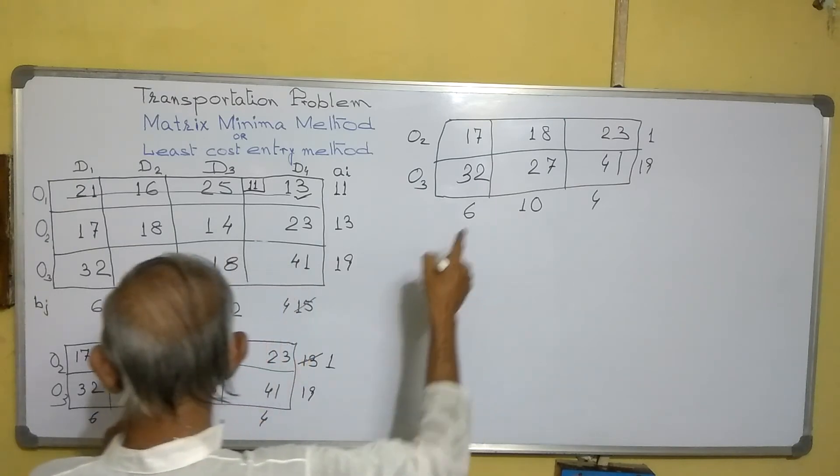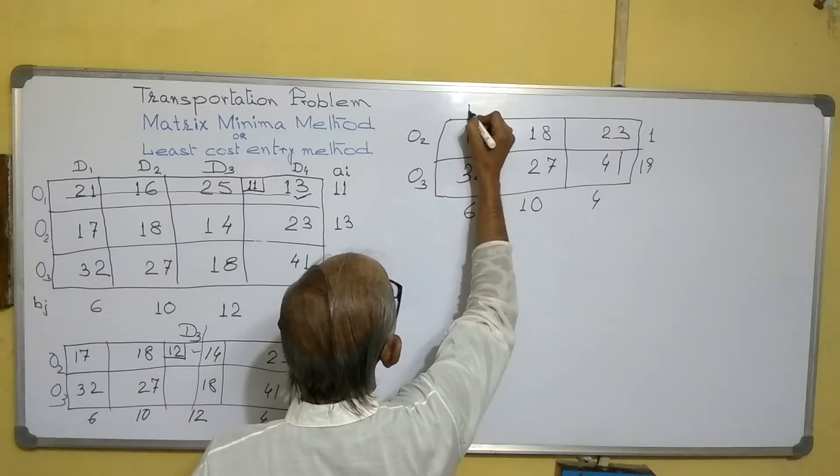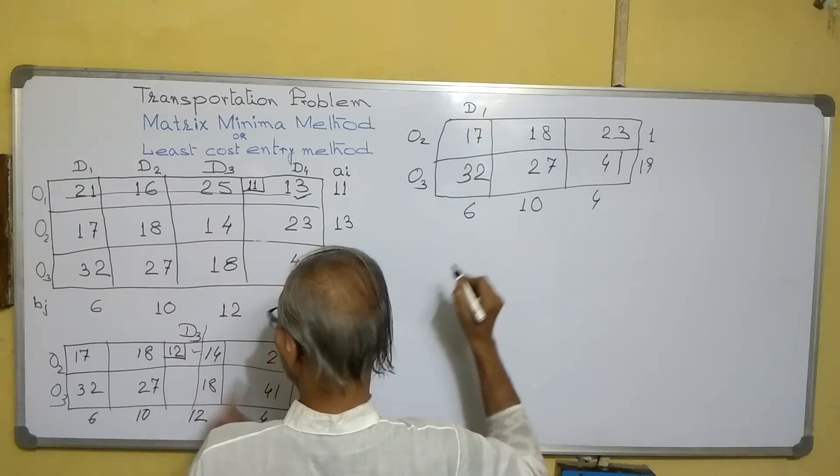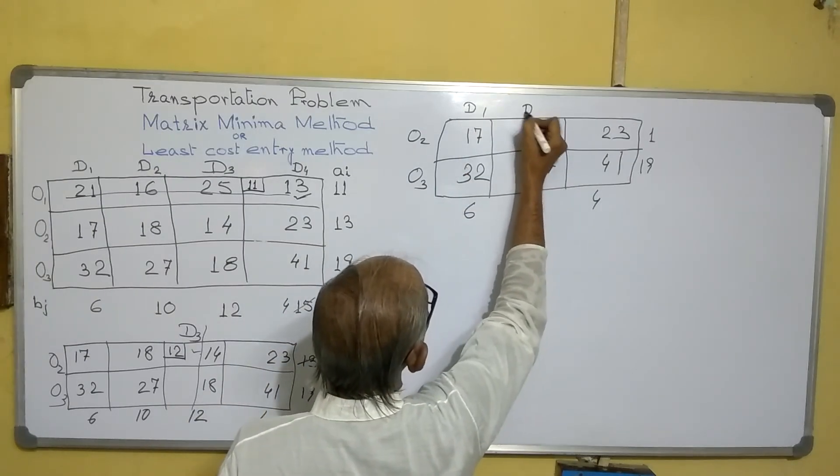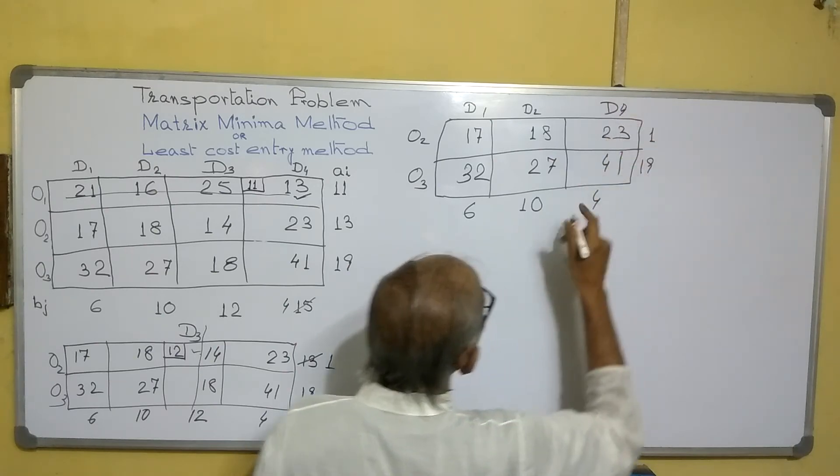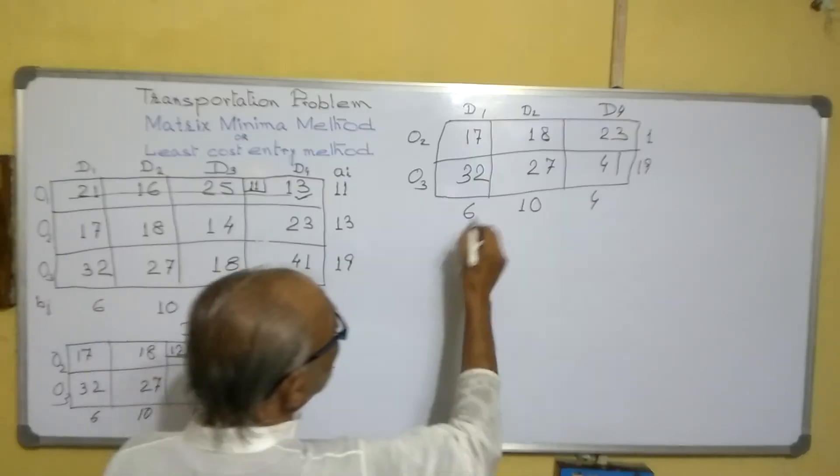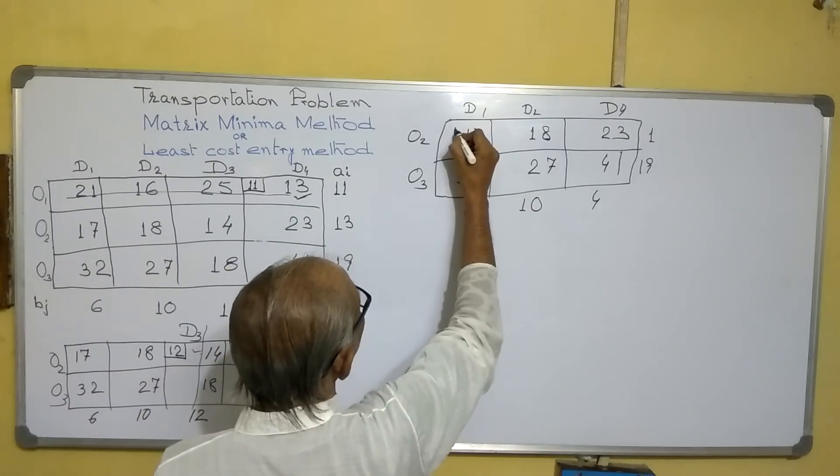Here it is D1, D2, and D4. These are there. Now see, the least out of all these things is 17.